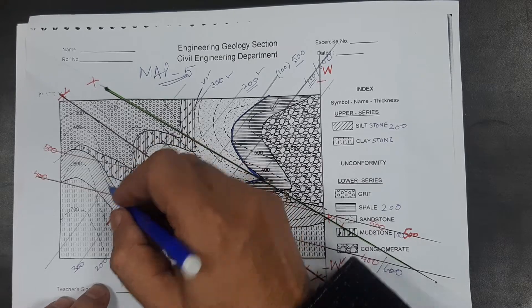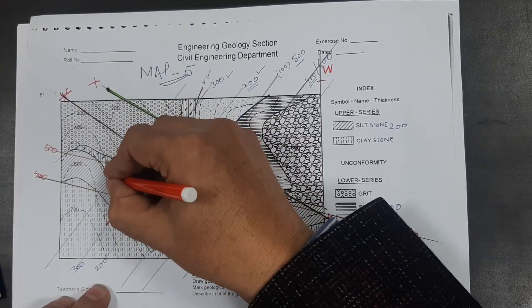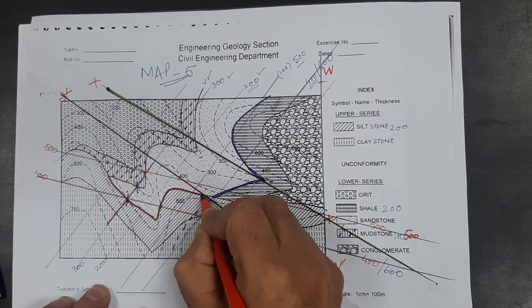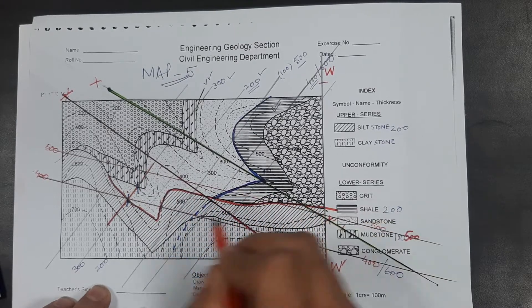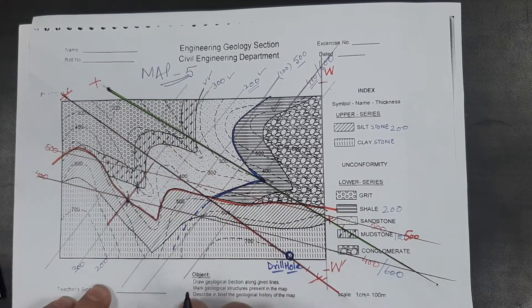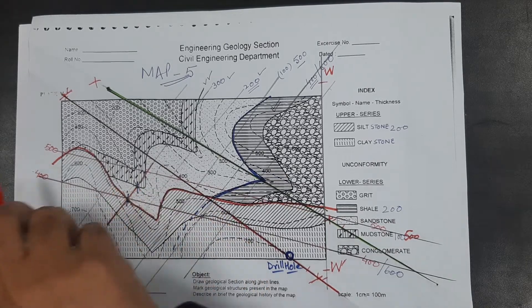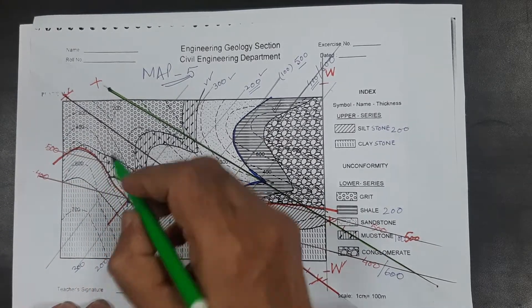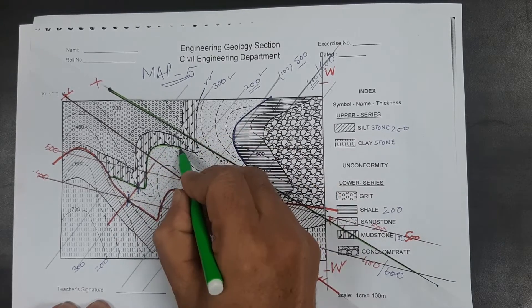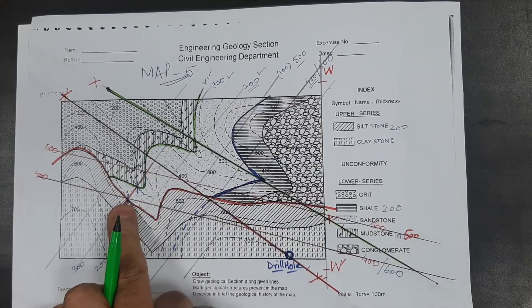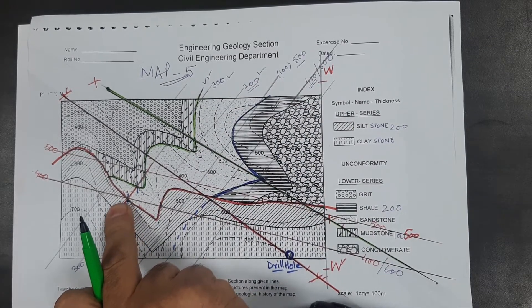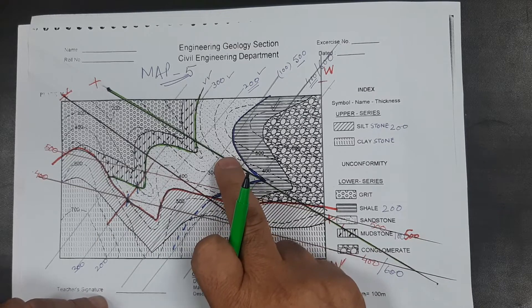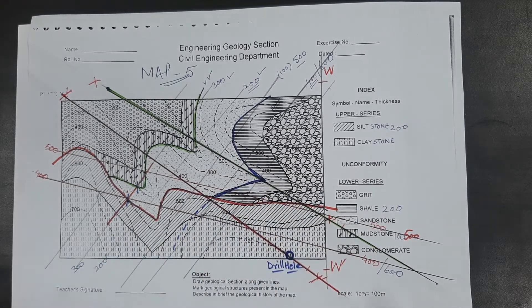That is not correct, because that line is not a contact of sandstone — it is the lower contact of siltstone only. It is also an unconformity surface. It has nothing to do with the sandstone. The lower contact of sandstone at the 300 strike line is correct, but the other point is the erosional surface, not the upper contact of sandstone. So getting 100 meters thickness is not correct.